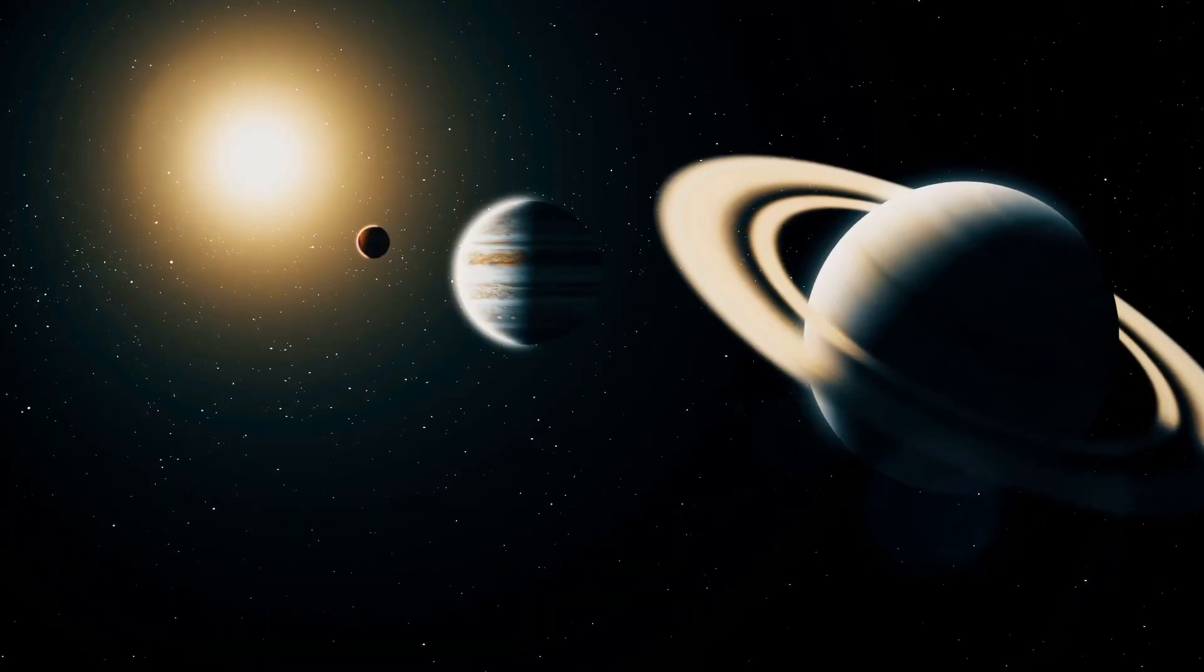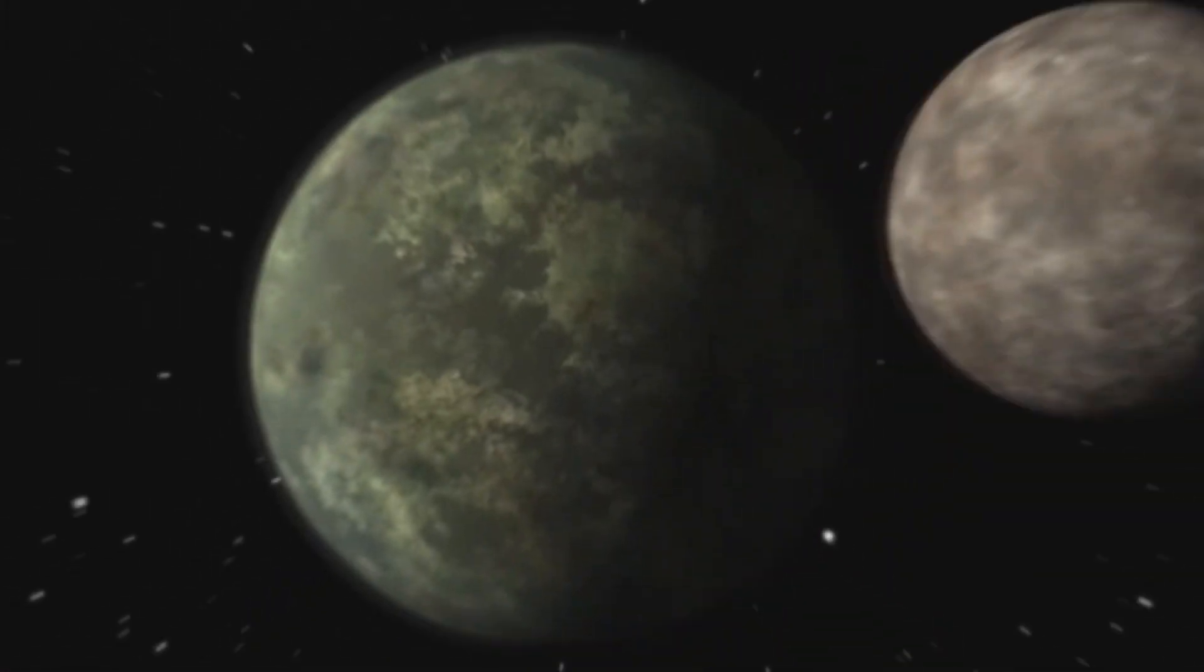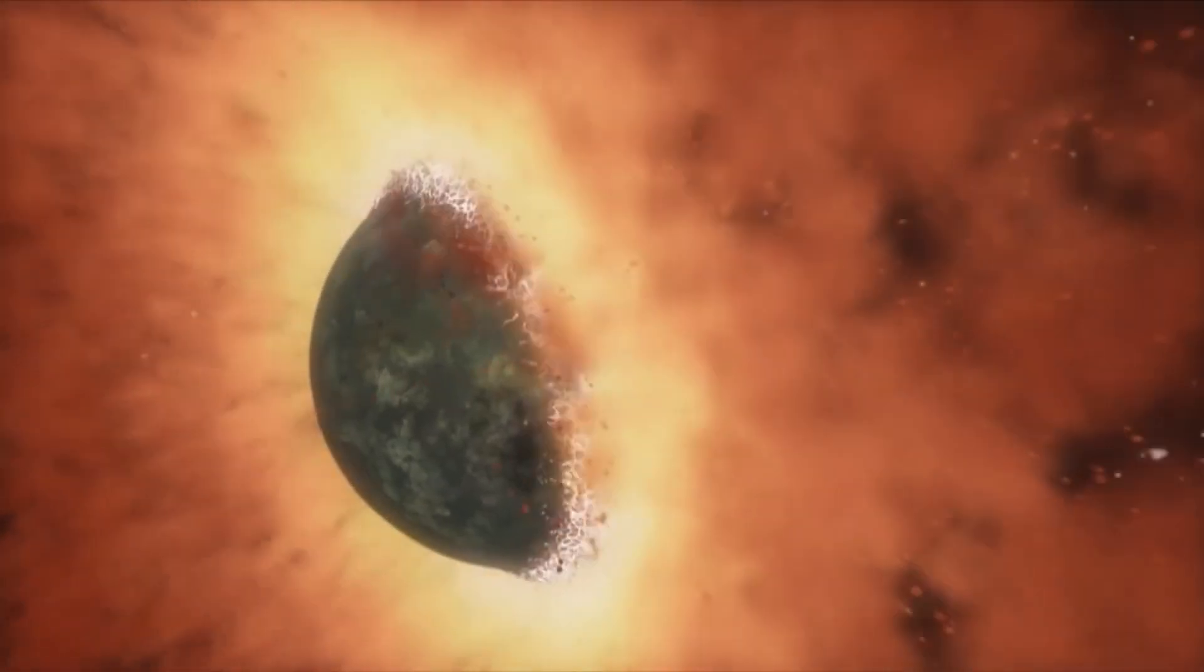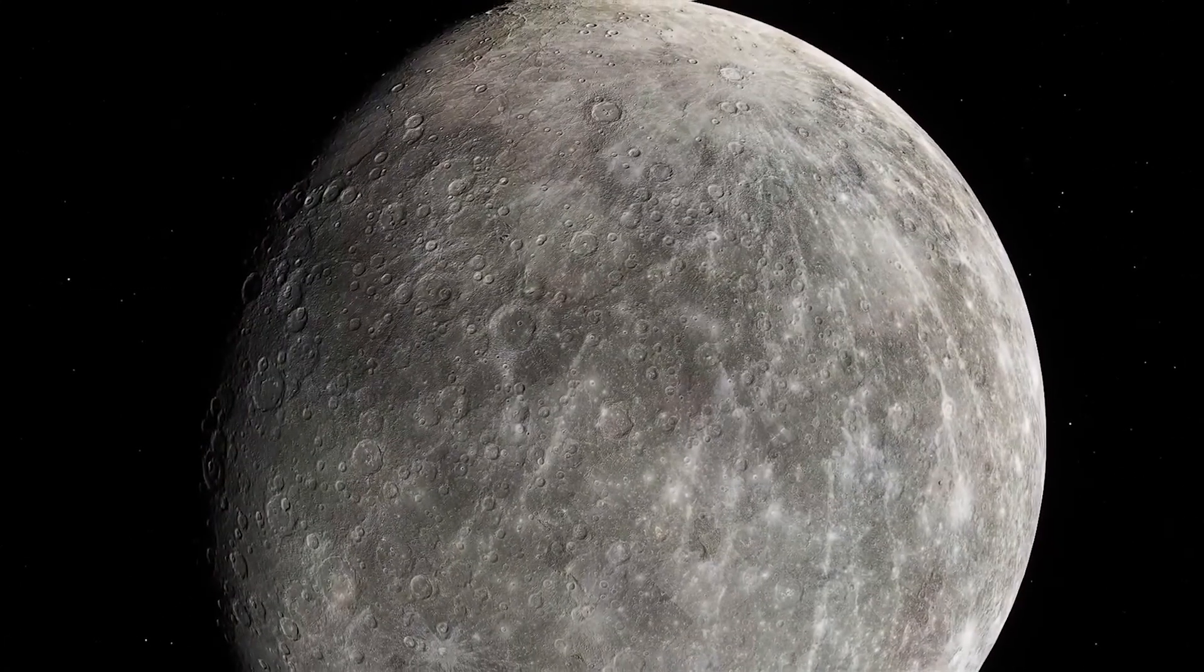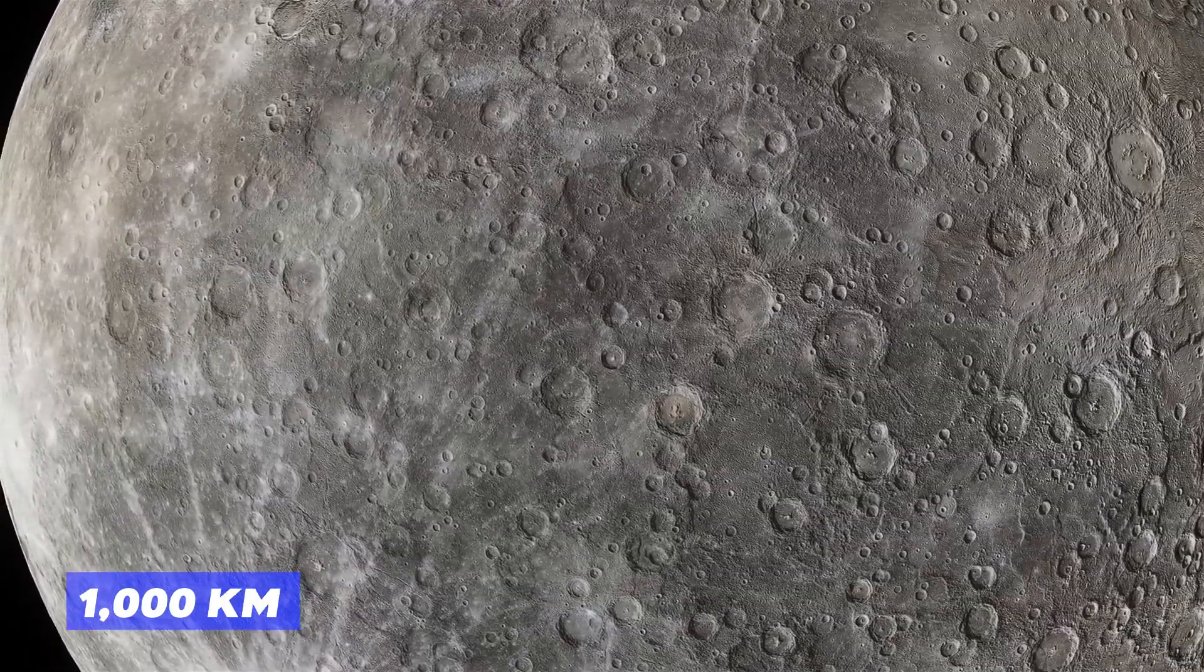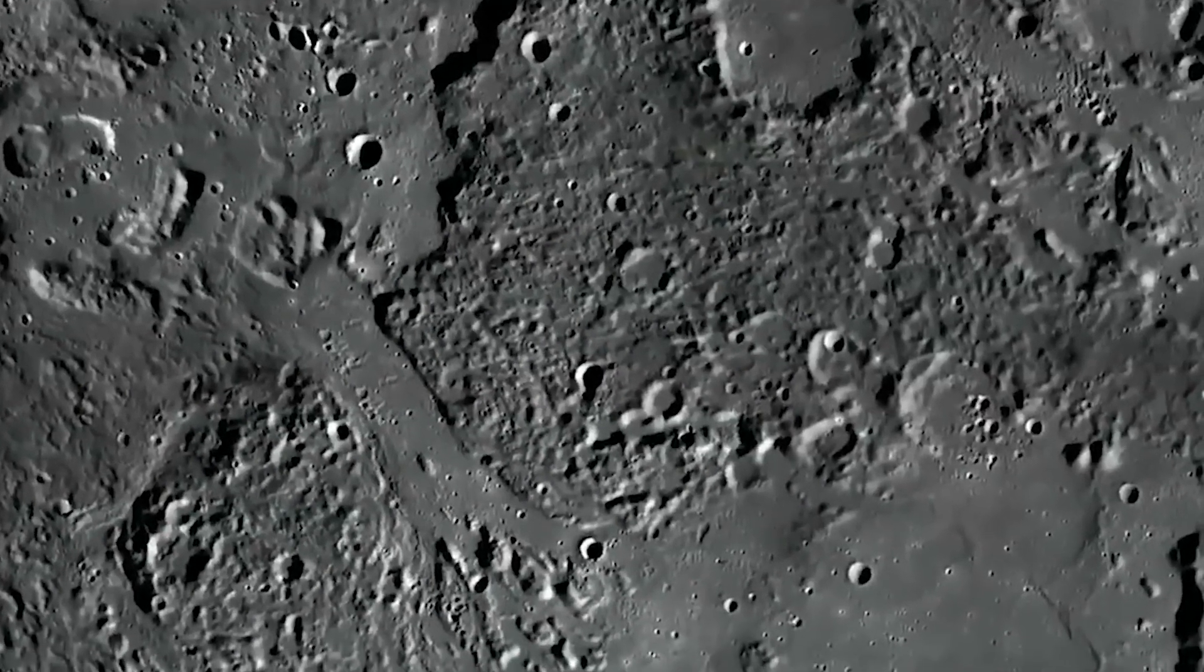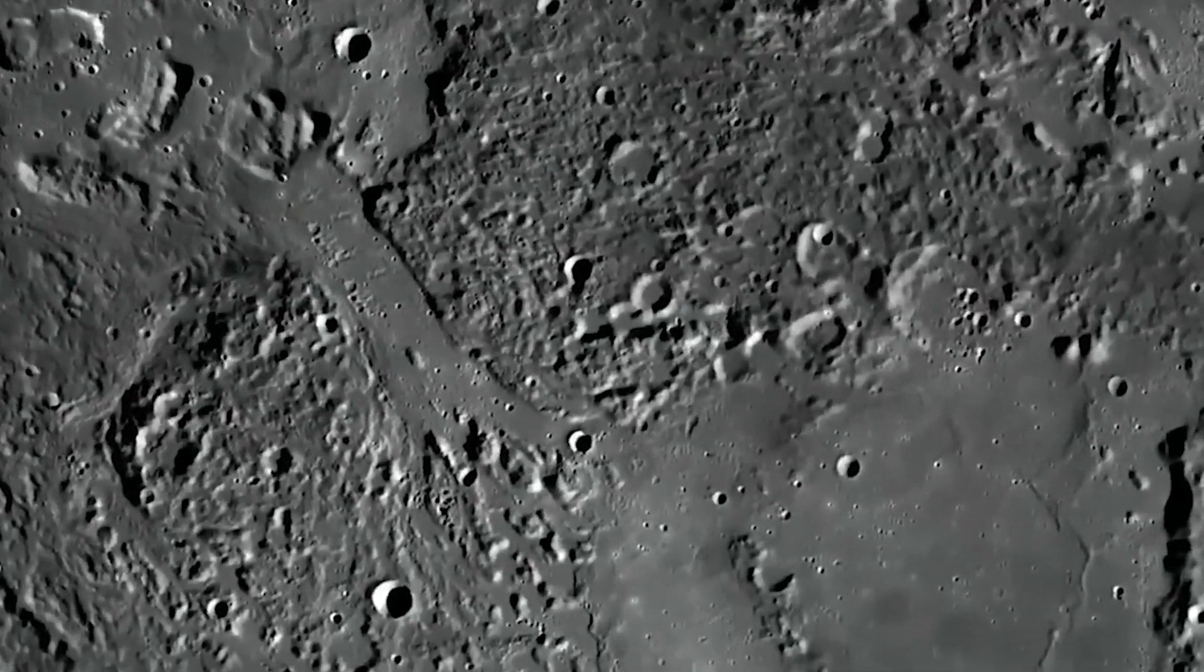Scarred surface. Mercury's surface is like no other in our solar system. It's a rugged, cratered landscape that tells the story of cosmic bombardment over billions of years. These craters, some as wide as 1,000 kilometers, are a testament to the planet's ancient history.